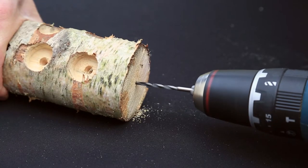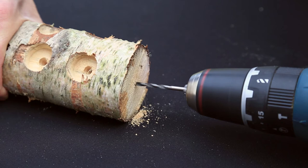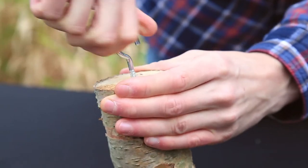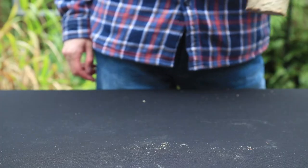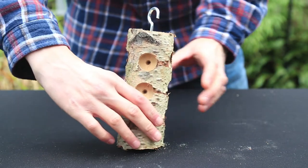Finally, drill a hole using the smaller drill bit into the top of the log for your hook. Screw the hook into the feeder and it's ready to hang up. But wait, aren't we missing something?